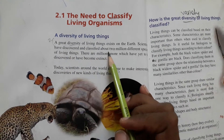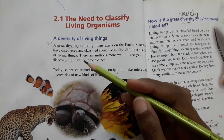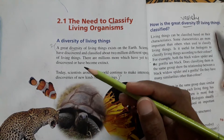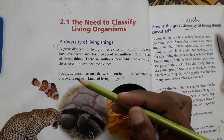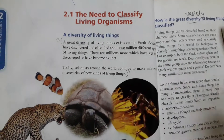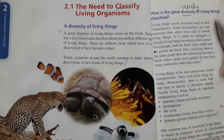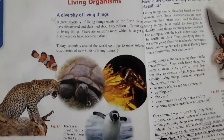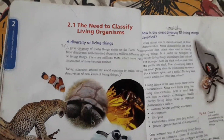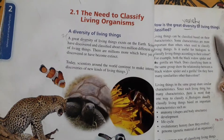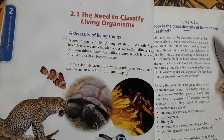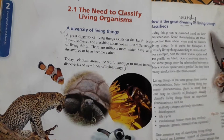Scientists have discovered and classified about 2 million different species of living things. There are millions more which have yet to be discovered or have become extinct. Today, scientists around the world continue to make interesting discoveries of new kinds of living things. In our environment, there are many different types of living organisms.